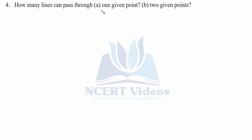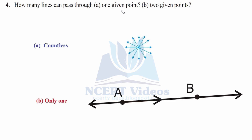Question four: how many lines can pass through one given point, and through two given points? For one given point — the answer is countless or infinite, because there are infinitely many lines that can pass through a single point. For two given points — only one line can be drawn, because any other line would not include both points simultaneously.